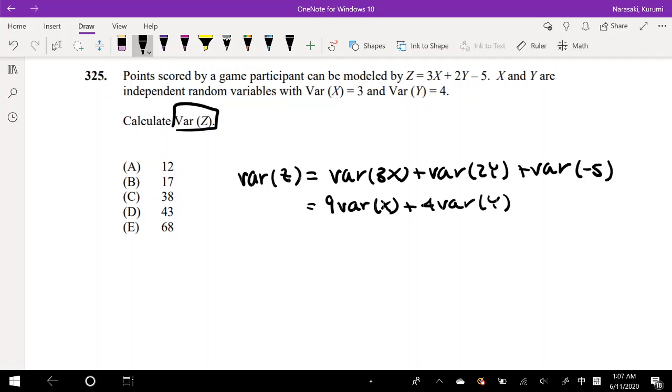So then this just becomes 9 times the variance of X, which is 3, plus 4 times the variance of Y, which is 4. So that's 27 plus 16, which is the answer of 43.